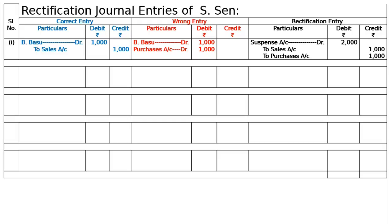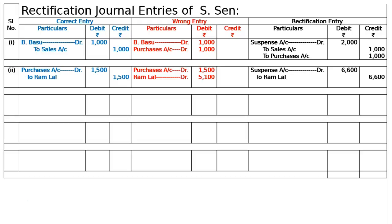Second entry: bought goods on credit from Ramlal Rs.1500, but was wrongly debited to his account as Rs.5100. The correct entry is purchases account debited to Ramlal Rs.1500. To cancel the Rs.5100 debit in Ramlal's ledger and bring in the Rs.1500 credit, we credit by Rs.6600. Hence, suspense account debited to Ramlal Rs.6600. Narration: purchases from Ramlal debited to his account by mistake, now rectified.